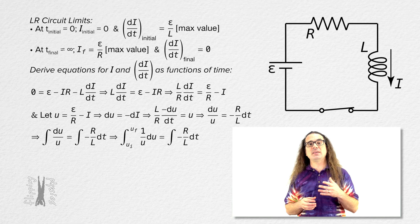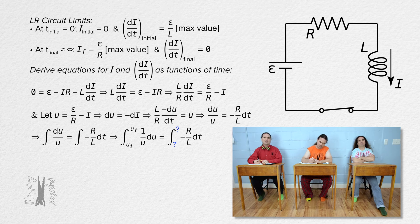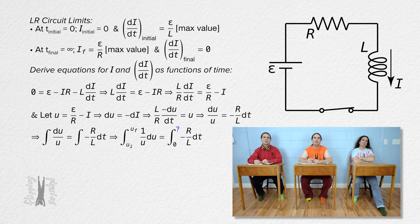What are the limits on the integral on the right-hand side of the equation? It's an integral with respect to time, so what are the initial and final values for time? Time initial is when the switch closes, which is time equals zero, so the initial condition for time is zero. We are not looking for what the current is after a long time — we are solving for equations as functions of time. So time varies from zero to time t; the final value for time is the variable t.